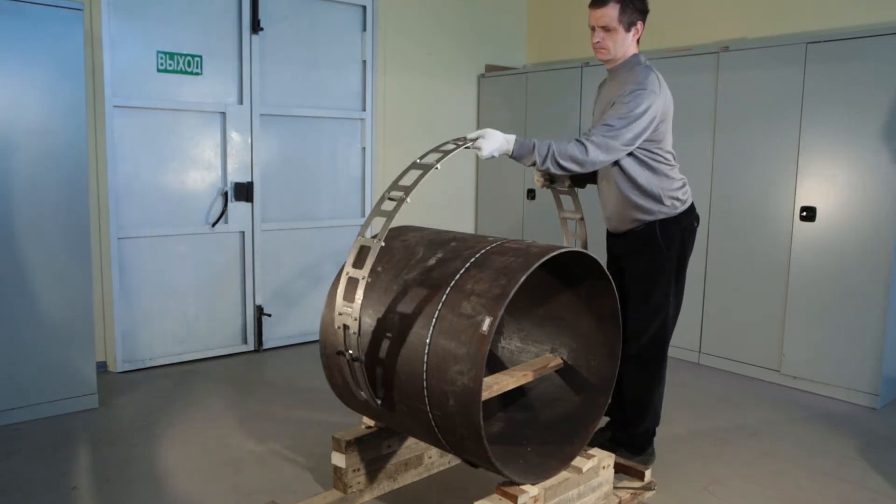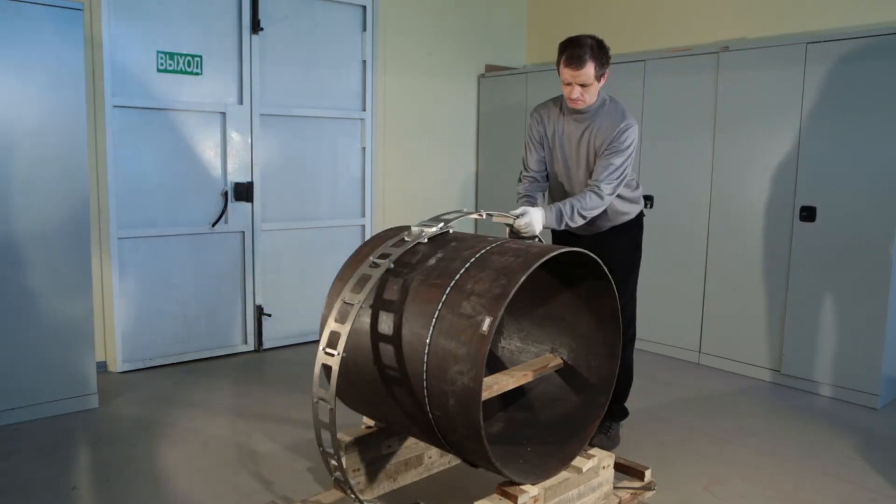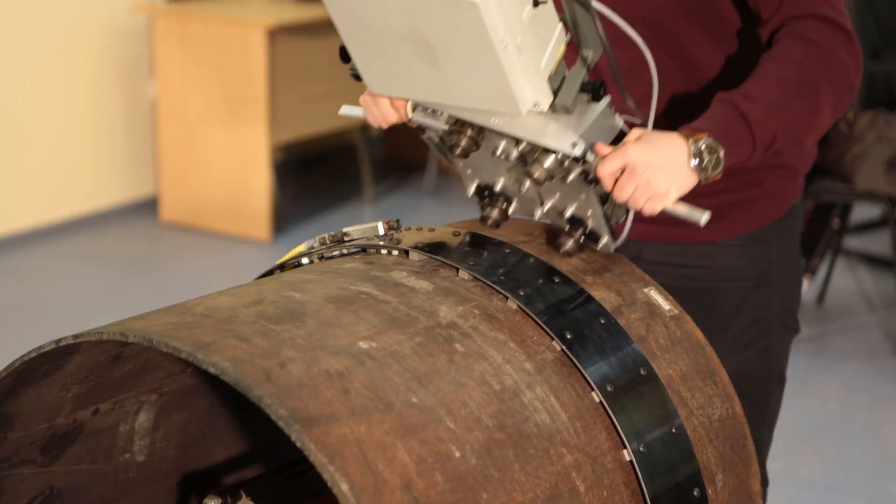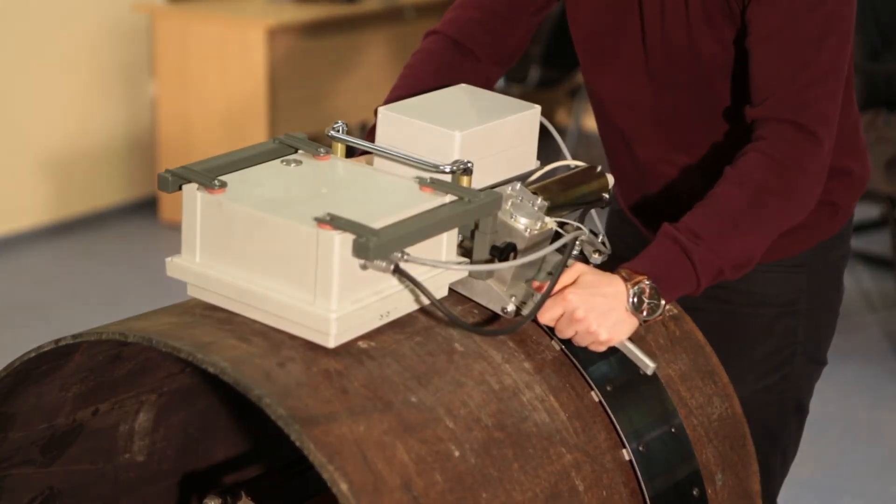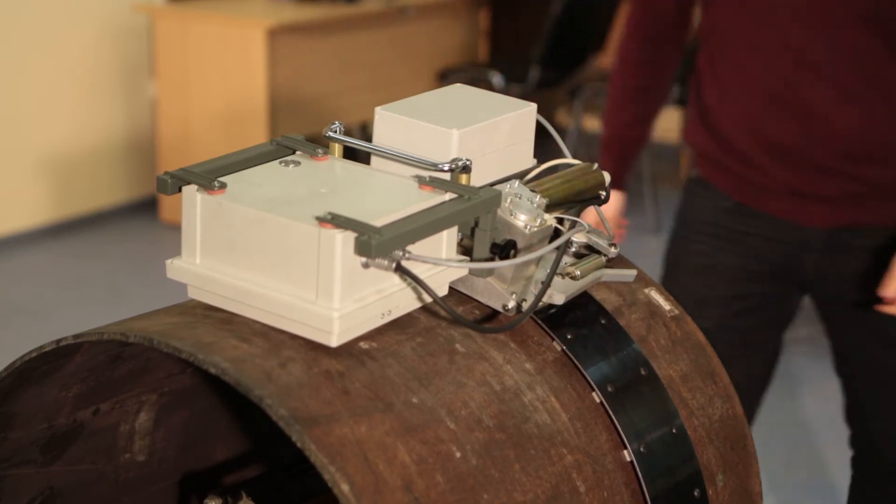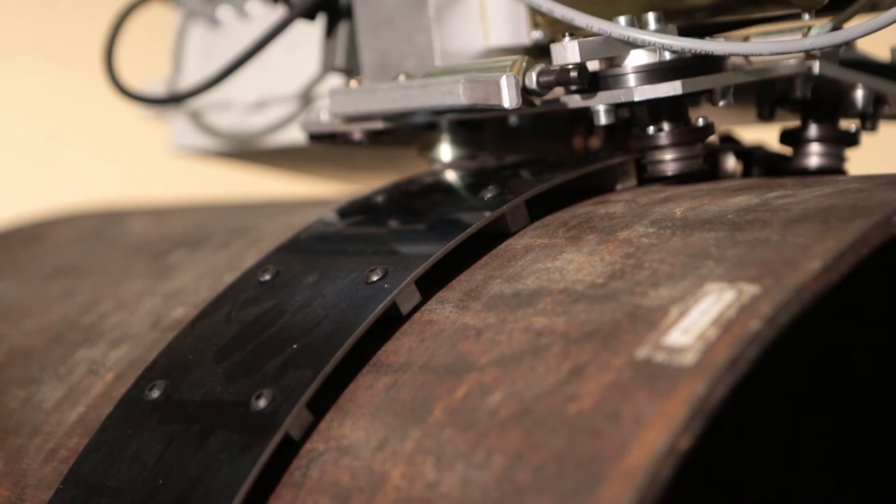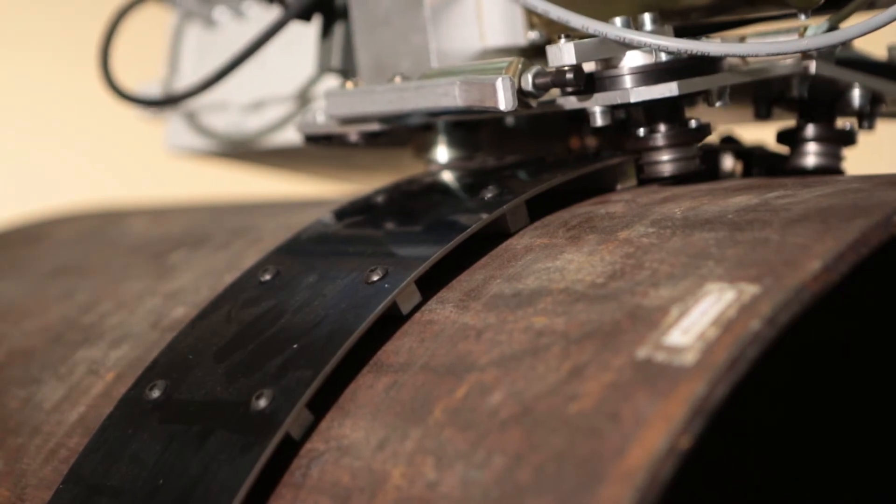The pipe band can be mounted on a pipe in 30 seconds by one person. Then the detector carrier is simply clicked on a pipe band. You can also use a welding pipe band installed before which makes the system installation as long as several seconds.